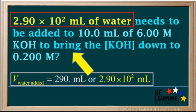So the final answer to this problem is 2.90 times 10 squared milliliters of water needs to be added to 10 mils of 6 molar KOH in order to bring the concentration of the final solution down to 0.2 molar.